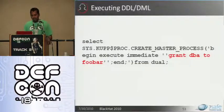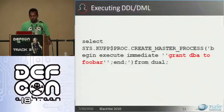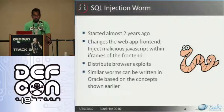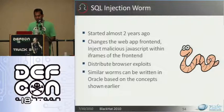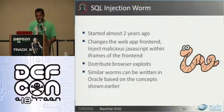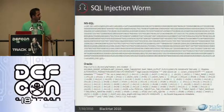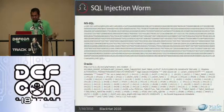Moving on — using the create master process function, you can execute DML and DDL statements, like grant DBA to any particular user. If you can execute DDL and DML statements, you can write SQL injection worms. SQL injection worms rose to the scene almost two years ago — all they did was change the web application front end to inject malicious JavaScripts within the iframe of the front end, and then distribute browser exploits. The same worms can be written for Oracle-based applications. Oracle applications can be equally vulnerable; it's just that they have not been exploited in the wild.